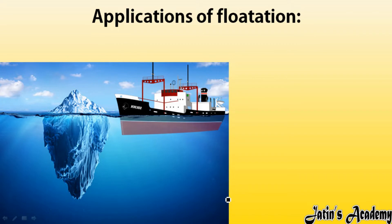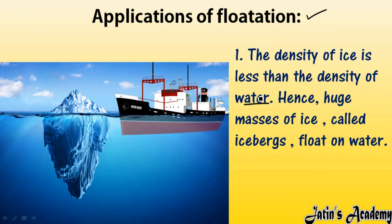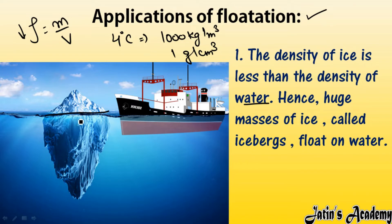Now for applications of flotation. The first application: the density of ice is less than the density of water. The density of water at four degrees Celsius is 1000 kg/m³ (or 1 g/cm³). The density of an iceberg is less than water because its volume is very large. Since density equals mass divided by volume, higher volume means lower density. Because the iceberg has less density than water, it floats on water.